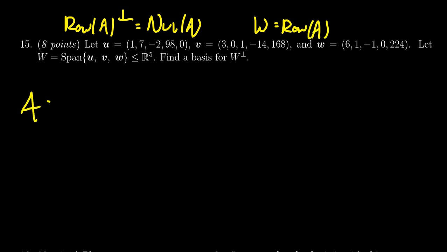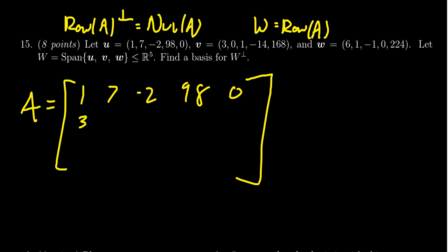So this would look something like the following. A looks like the matrix: the first row will be u, which is 1, 7, negative 2, 98, and 0. The second row will be v, which is 3, 0, 1, negative 14, and 168. And then row 3 will be w, which is 6, 1, negative 1, 0, and 224, like so.